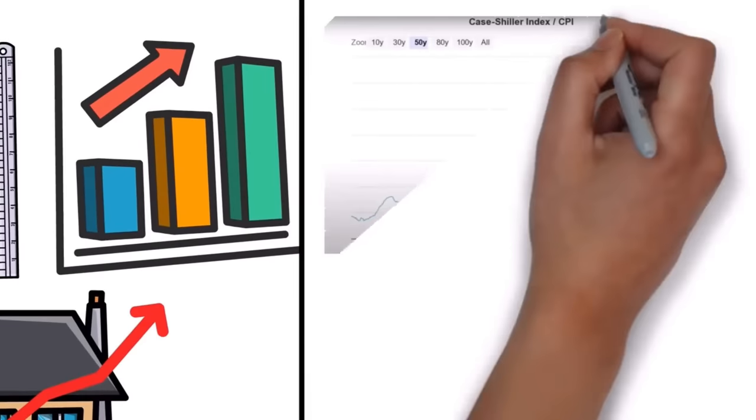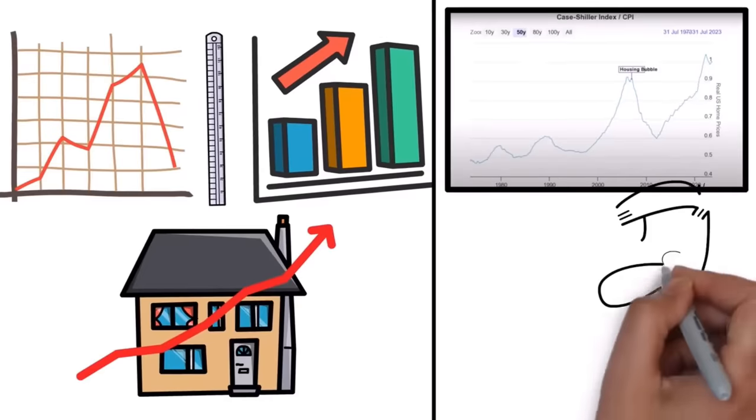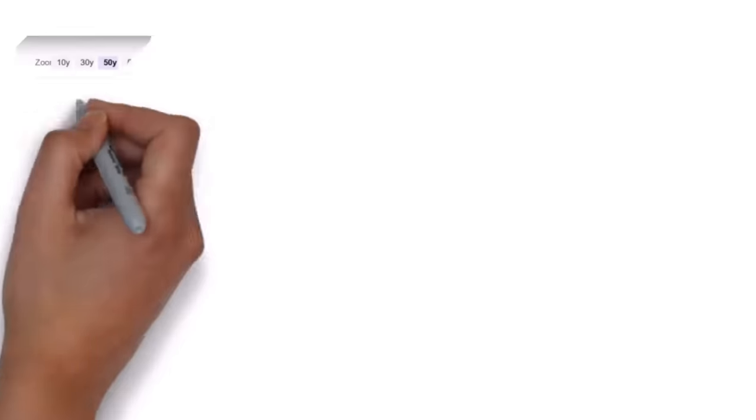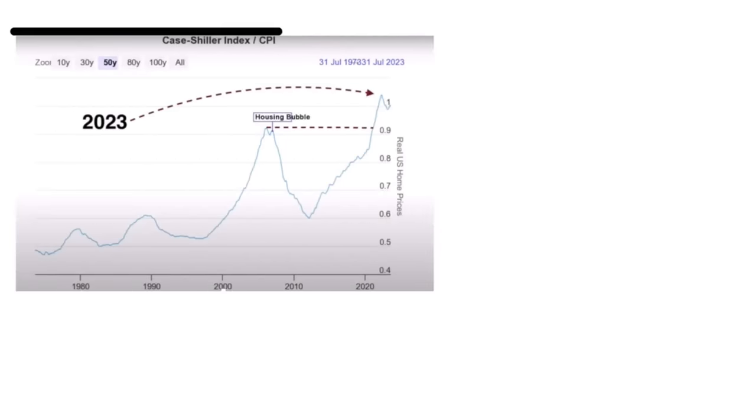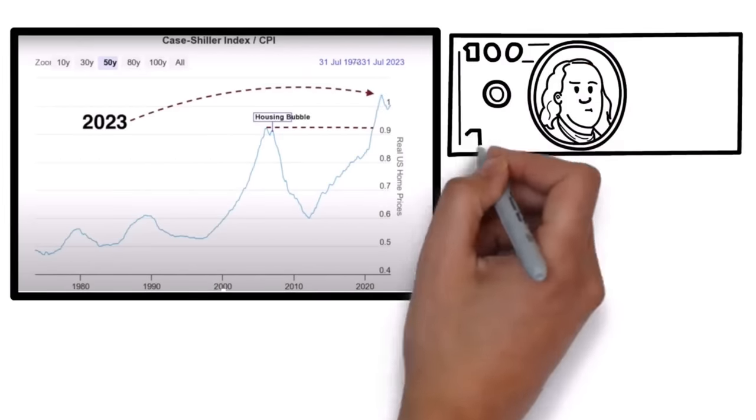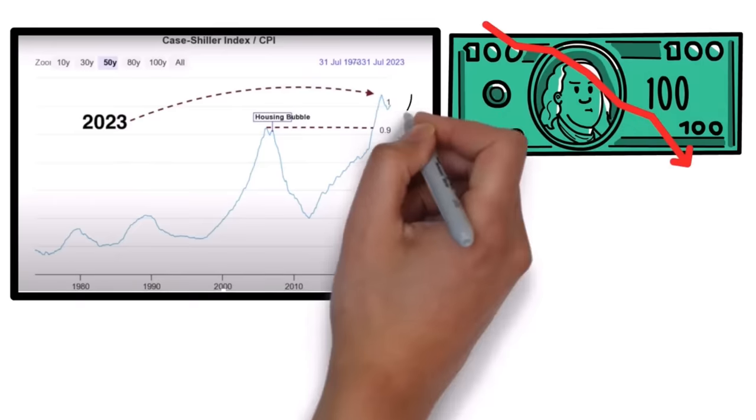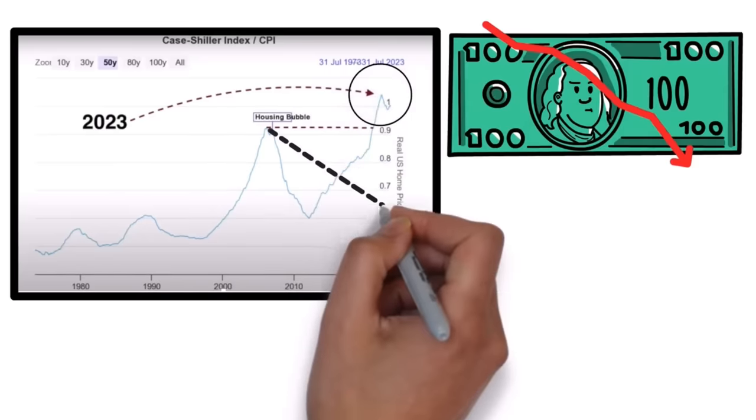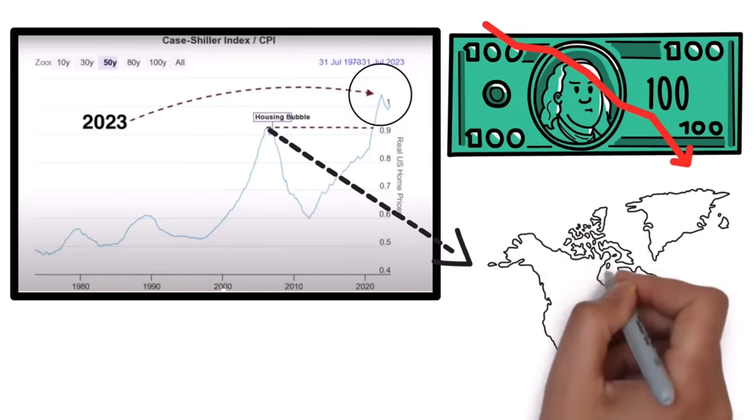To do that, there is the inflation-adjusted Case-Shiller, which shows real home prices. This chart will show us truly how home prices are overpriced without the illusion of the falling dollar. And as you can see right now, we have surpassed the last bubble, which was considered monumental in terms of U.S. history.